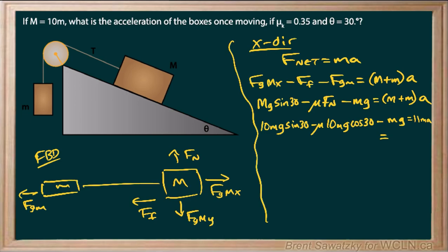All right, so looking at that, this seems like a good time to cancel out some m's. So we have all those m's, m in every term, so that simplifies that a little bit. So that leaves us with 10 G sin 30 minus Mu 10 G cos 30 and minus G, fit that in there, equals 11A.